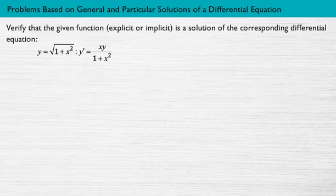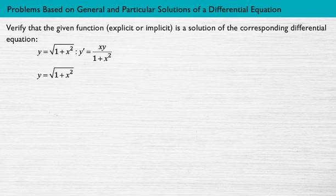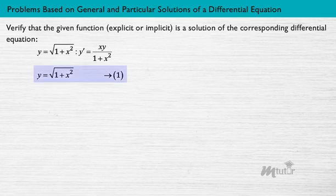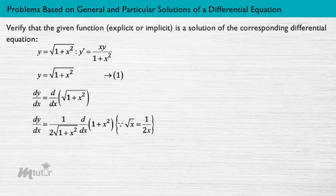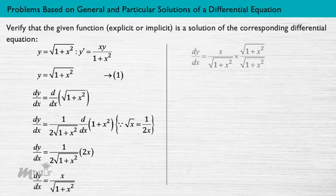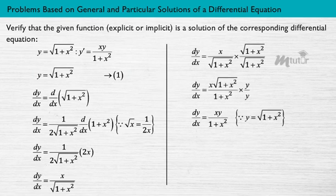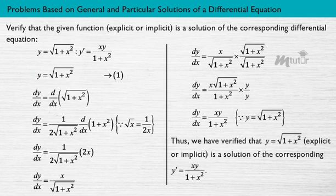Verify that the given function, explicit or implicit, is a solution of the corresponding differential equation given on the screen. From the question, we have the function y = √(1 + x²) — name it equation 1. Now differentiate equation 1 with respect to x. Differentiating the terms and simplifying, we get the first derivative, and simplifying further we get the derivative as xy/(1 + x²). Thus, we have verified that the given function is a solution of the corresponding differential equation.